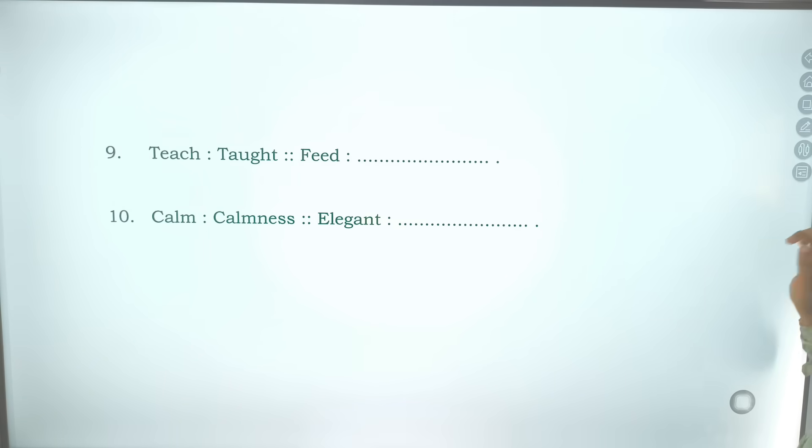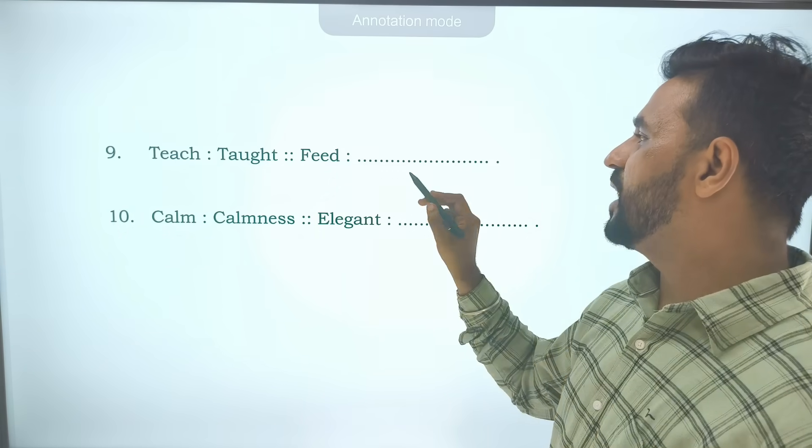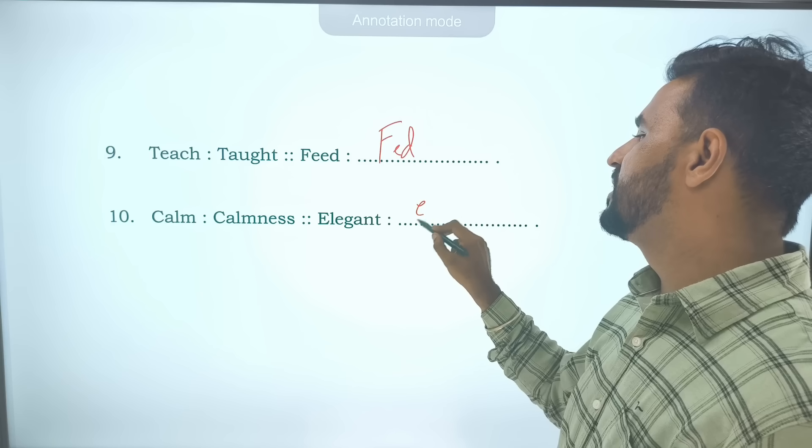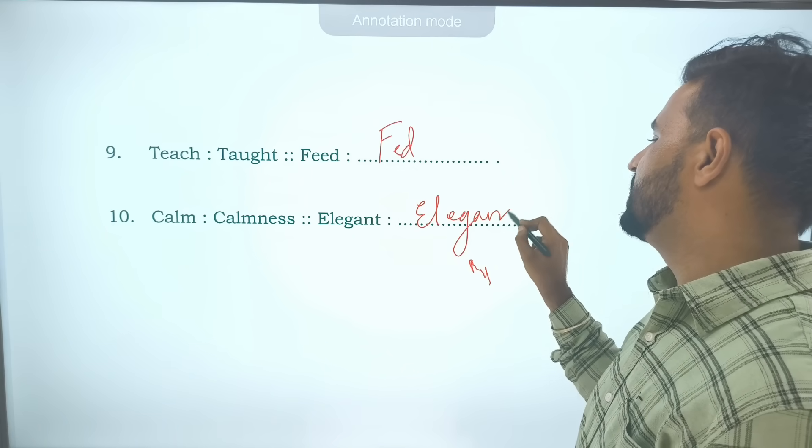Fresh, opposite is stale. Then opposite of expand is contract. Success will become failure. Stitch will become stitched. Feed will become fed. Thing, thingness. Elegance. So I hope you got this.